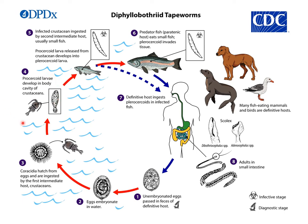The Cyclops will then be ingested by different small fishes, and in their body another structure — the plerocercoid — will be developed. These small fishes act as the second intermediate host. Sometimes these small fishes are further ingested by larger predator fish. In the musculature of these big fishes, the same structure remains encysted. The final host — dog, cat, different kinds of bear, and man — will be infected after ingesting the musculature of this fish, the small fishes, or the offals.